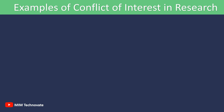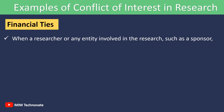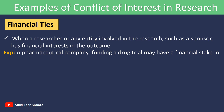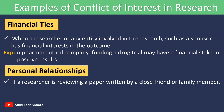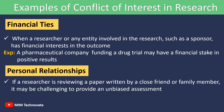Examples of Conflict of Interest in Research. Financial Ties: When a researcher or any entity involved in the research, such as a sponsor, has a financial interest in the outcome. For example, a pharmaceutical company funding a drug trial may have a financial stake in positive results. Personal Relationships: Personal relationships can also create conflicts. If a researcher is reviewing a paper written by a close friend or family member, it may be challenging to provide an unbiased assessment.